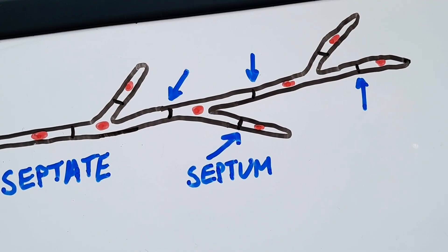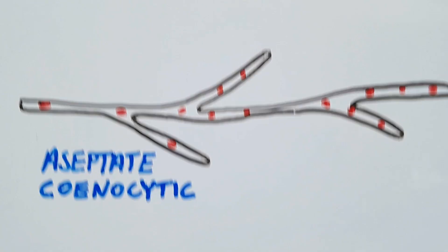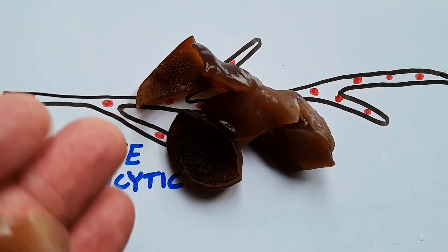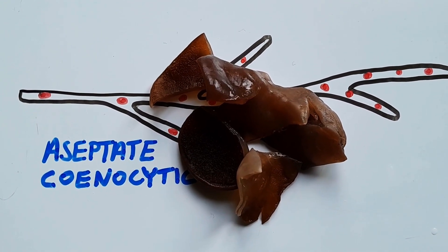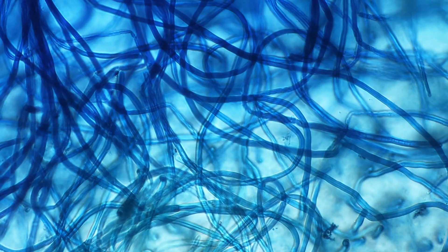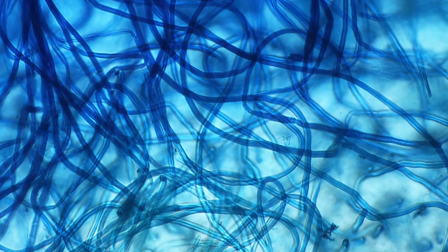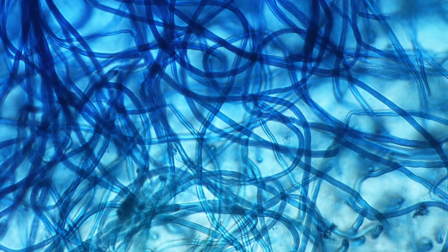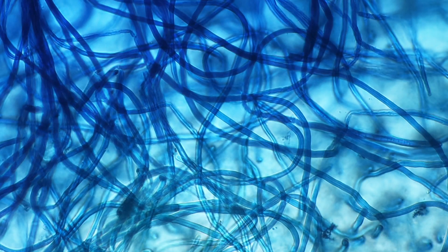Now, why is this interesting? The cell theory, which is the foundation of biology, states that all living things are made of cells, and the cell is the basic unit of life. This suggests that organisms should be composed of distinct individual cells. But aseptate fungi challenge this idea — their hyphae can grow several centimeters long without any cellular divisions. So are these hyphae a single cell, or are they multiple cells that have fused together? It's a fascinating gray area that pushes the boundaries of how we define a cell.